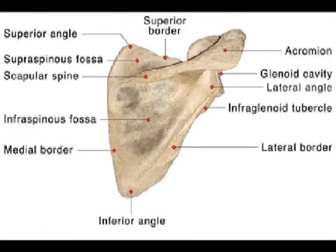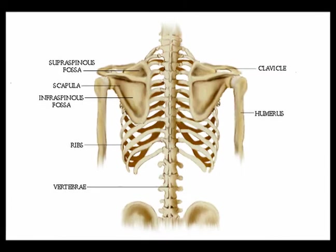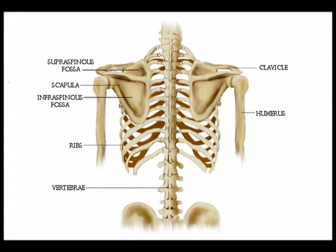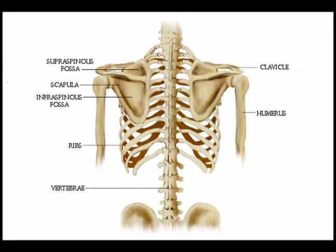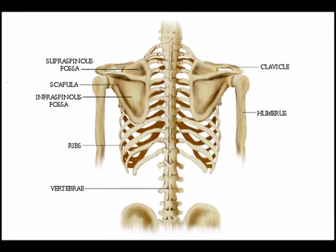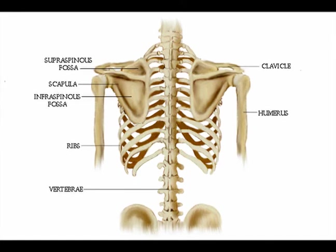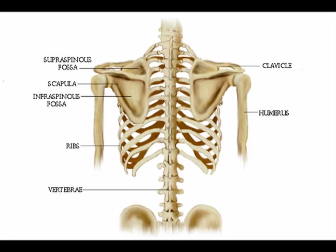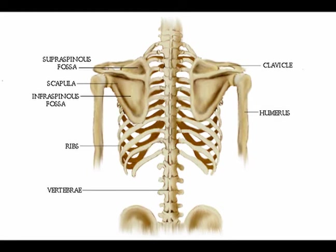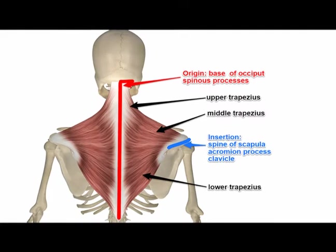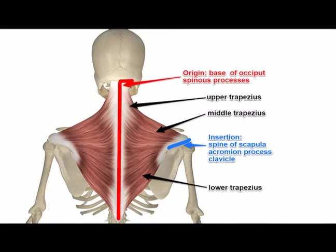There are three different types of scapular dyskinesis. If you think about how the shoulder blade is on the back of the ribcage: the first type is that the inside border is completely away from the spine. The second type is when the lower edge of the inside border is away from the spine. The third type is when someone is moving the shoulder and there is abnormal motion — the scapula either raises or rotates an excessive amount.